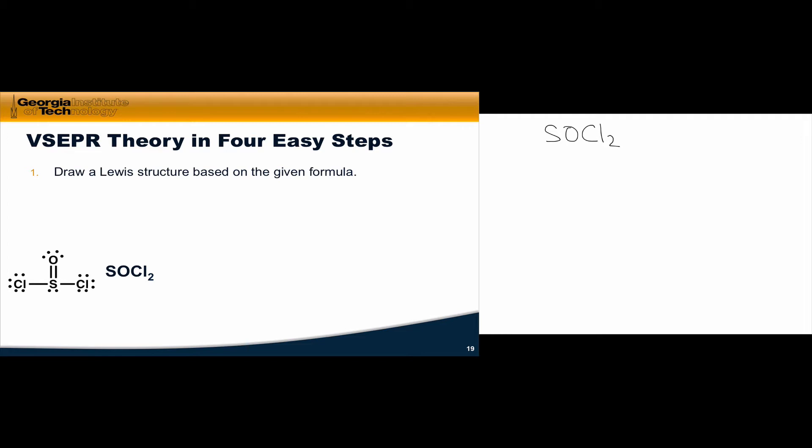The first step when applying VSEPR theory is to get a Lewis structure in hand, and that may involve, for example, drawing a Lewis structure from a given structural formula. So, SOCl2 contains sulfur, oxygen, and two chlorines.